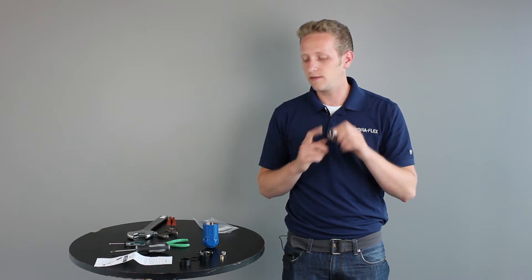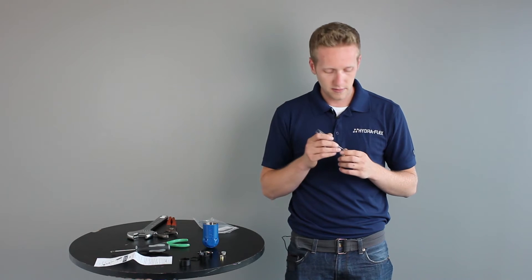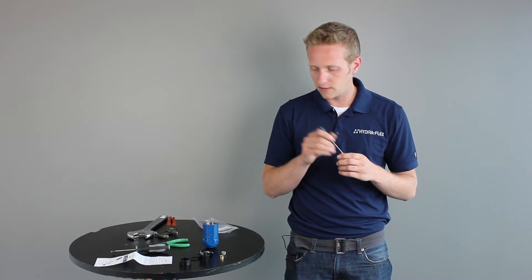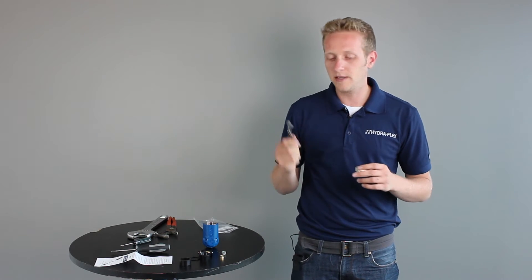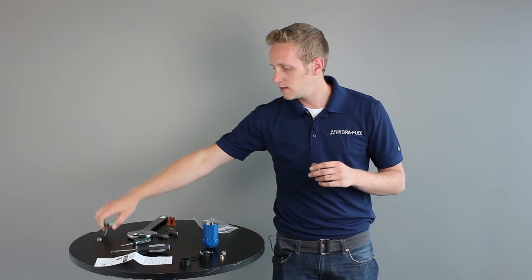Next we're going to take out the inlet screen. To do this you can take your flat head screwdriver and just pry a little bit away on the sides, then grab your needle nose pliers, take the old screen, and toss that away.